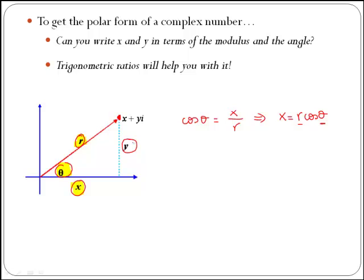Now, if we do the same with y, we can relate y, r, and theta by using sin of theta, which is y over r. And that gives us y is equal to r sin of theta.